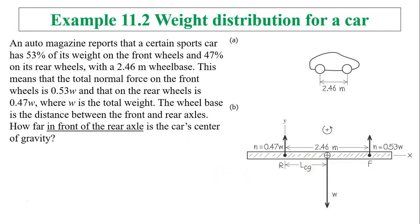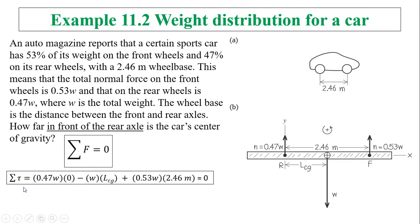Let's talk about the conditions of equilibrium: net force equals 0. We already know 0.47W plus 0.53W equals W, so the first condition satisfies equilibrium. The second condition is the torque - net torque has to be 0. When we talk about torque, we have to talk about a point. It doesn't really matter which point you choose; you can choose any point that's convenient for you. Because we're trying to find LCG, the point I would like to choose is at the rear axle.